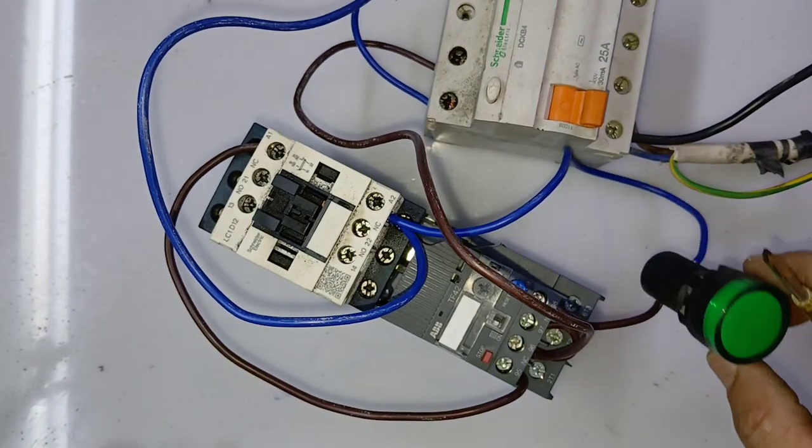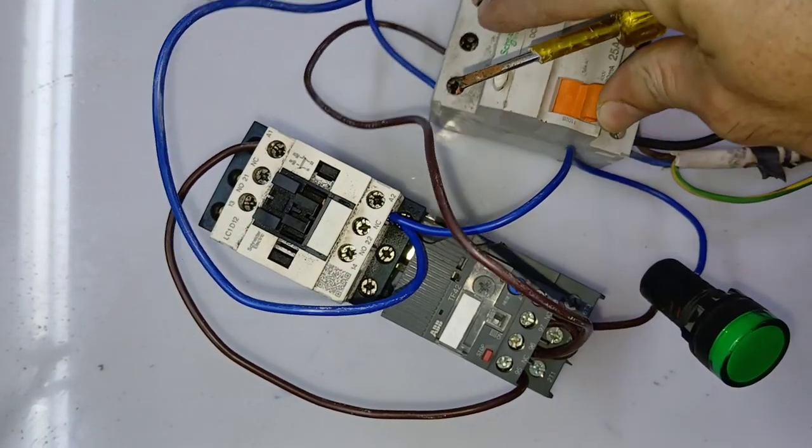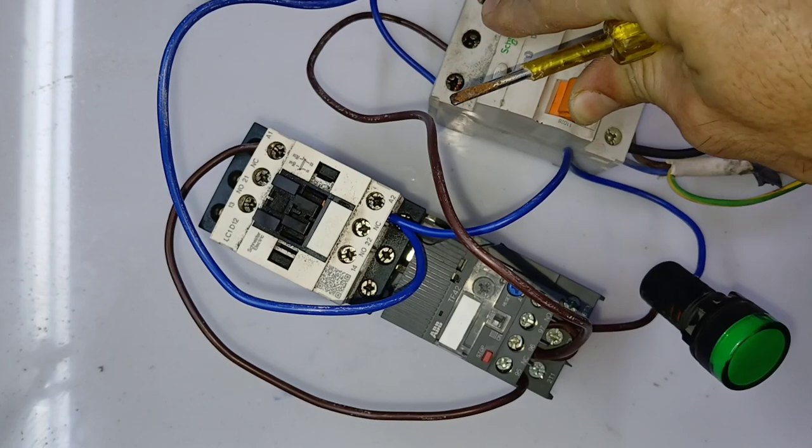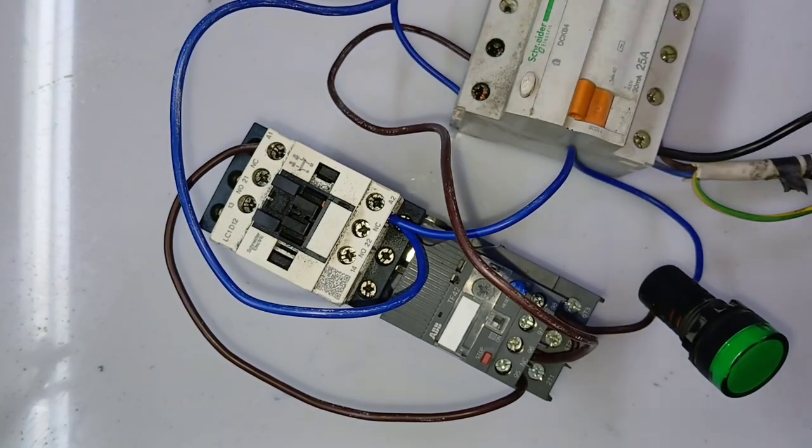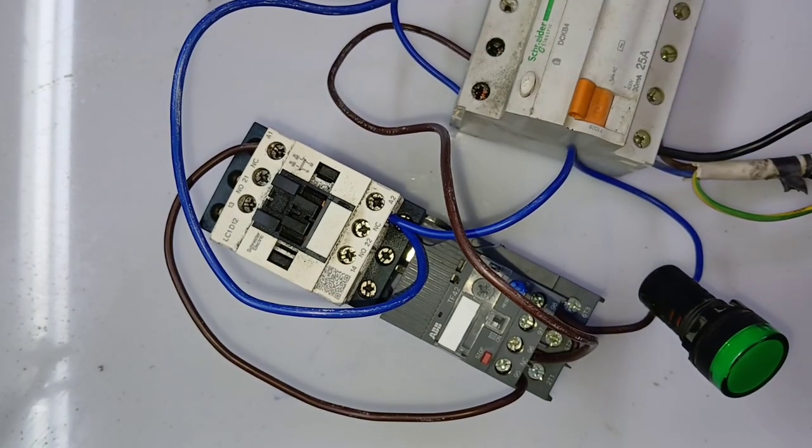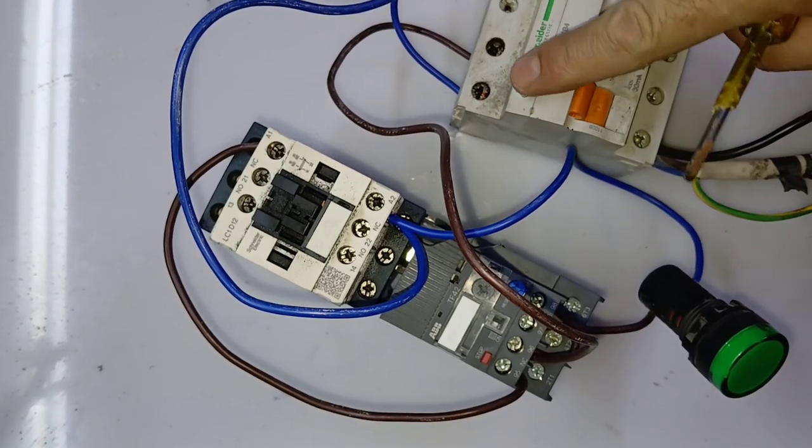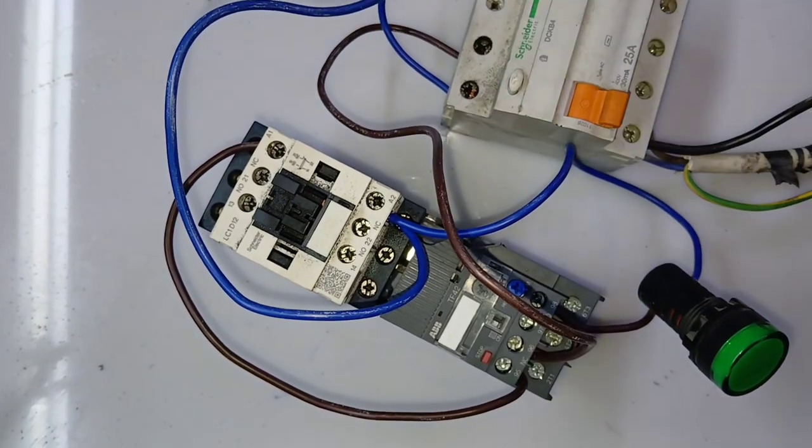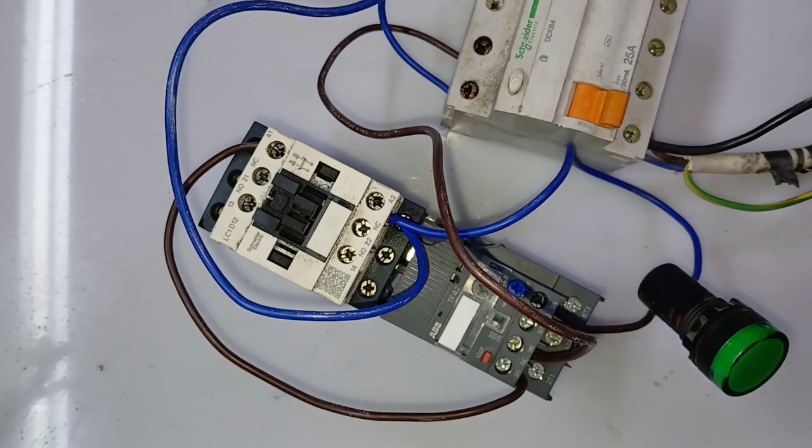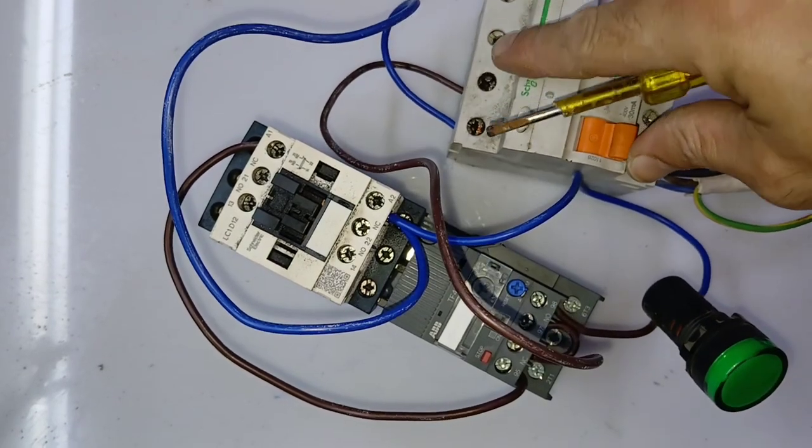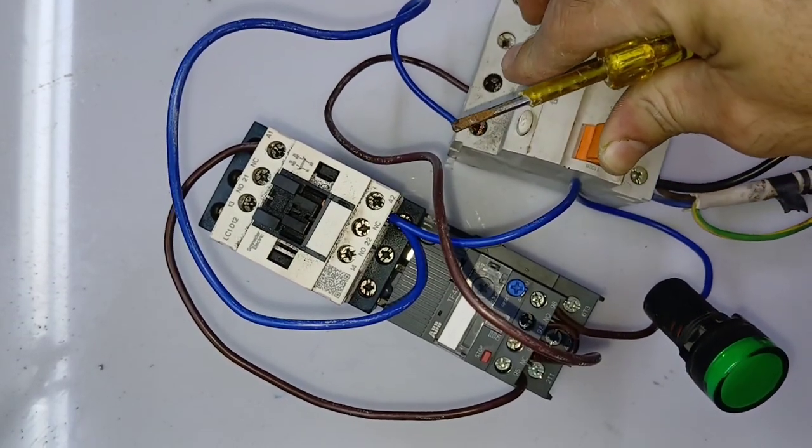Now you can see line is going on 96, from 96 loop, then indicator, then contactor, then power supply. So now just switch it on. You can see the contactor is on, it's normal. You can see the indicator is not getting on because this indicator is used for trip. How it works I will show you now.